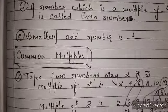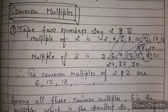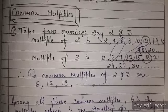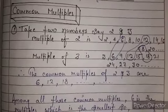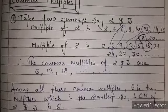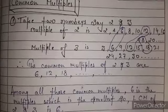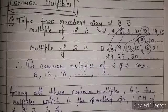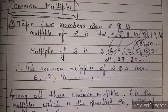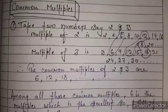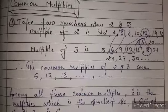Now we come to another topic: common multiples. Take 2 numbers, say 2 and 3. Multiples of 2 are 2, 4, 6, 8, 10, 12, 14, 16, 20 and so on. Multiples of 3 are 3, 6, 9, 12, 15, 18, 21, 24, 27 and so on. The common multiples of 2 and 3 are 6, 12 and 18. Among all these common multiples, 6 is the smallest. So the lowest common multiple, that means LCM of 2 and 3 is 6.